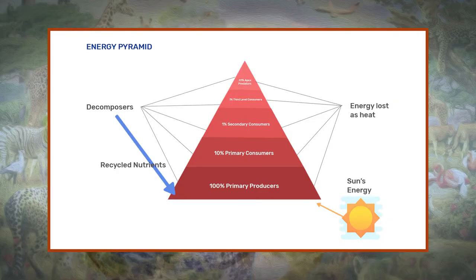An ecological pyramid represents the biomass or the energy flow in an ecosystem. Both the food chain and the ecological pyramid start at the trophic level which is comprised of primary producers.